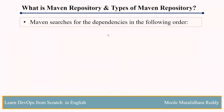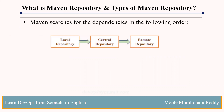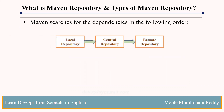As I said earlier, when you use that build lifecycle, Maven checks step by step for dependencies. First one is local repository — it will be verified in local repository first. If it is not there, it will go to central repository.